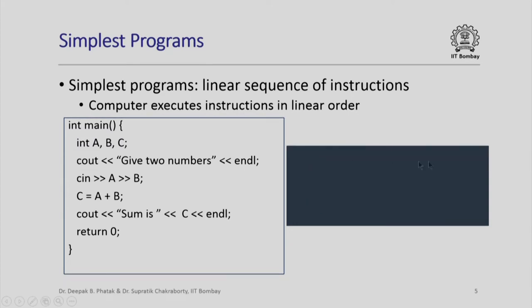On the right hand side I have shown the computer screen as it might appear as the instructions in this program are executed sequentially. The operating system calls this main function and passes control to it. When the main function executes, the first statement is really a declaration — a directive to the compiler to reserve appropriate amounts of storage in memory and to interpret the bits stored in those locations in the appropriate way.